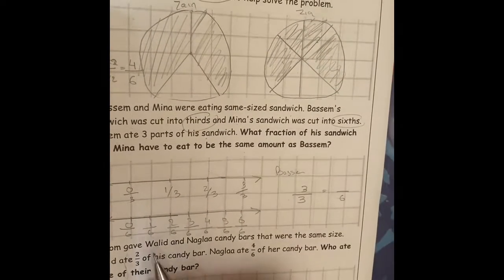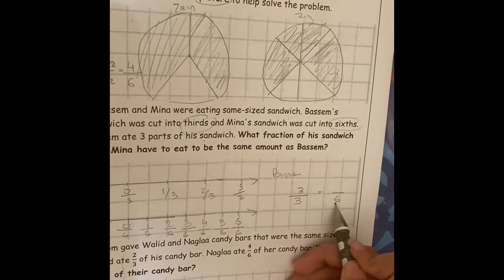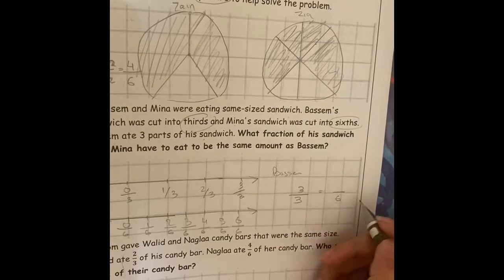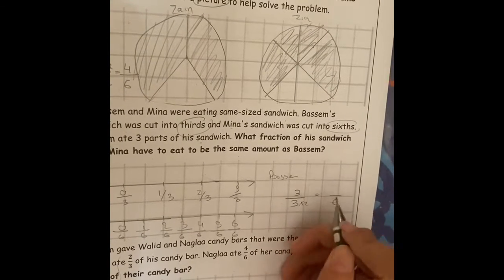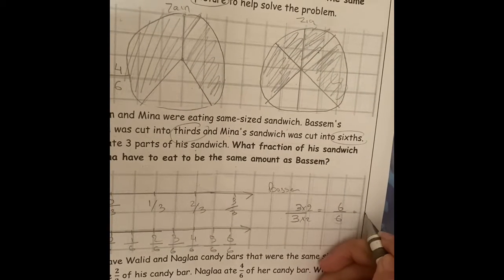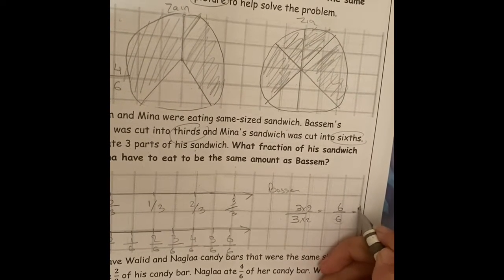How much did Mina eat? 3 becomes bigger, 3 becomes 6. We are going to make times, 3 times 1 equals 6, 3 times 2 in the numerator as well, 3 times 2 equals 6, so he ate the whole sandwich as well.